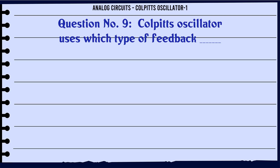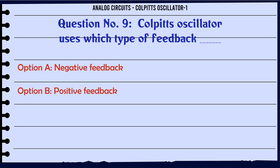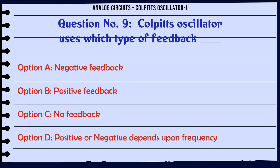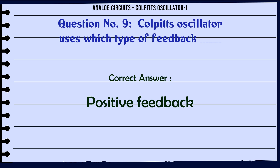Colpitt's oscillator uses which type of feedback? A) Negative feedback, B) Positive feedback, C) No feedback, D) Positive or negative depending upon frequency. The correct answer is: Positive feedback.